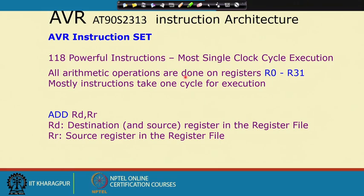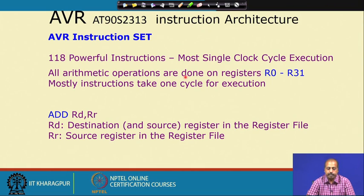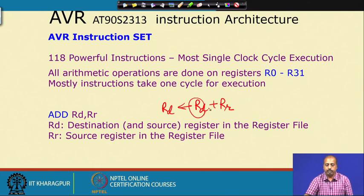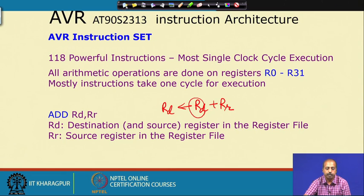The ADD instruction in this AVR processor has the form ADD RD, RR, where RD is the destination and source register in the register file and RR is the other source register. The operation that will happen is RD gets RD plus RR. This is the destination and source, and the second register is the other source. This is how the ADD instruction may be executed.